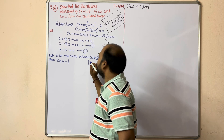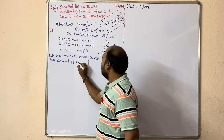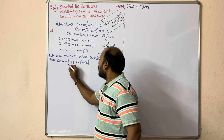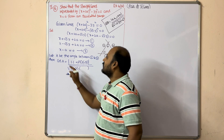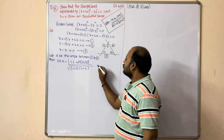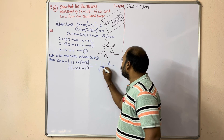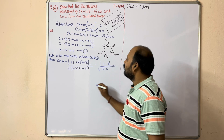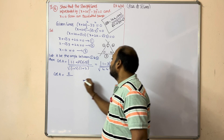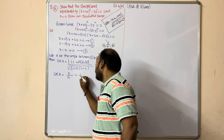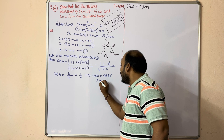For angle A between lines 1 and 2: the x-coefficients are both 1, so a₁a₂ = 1×1 = 1. The y-coefficients give b₁b₂ = √3 × (−√3) = −3. So the numerator is |1 − 3| = 2. The denominator is √(1² + (√3)²) × √(1² + (−√3)²) = √4 × √4 = 4. So cos A = 2/4 = 1/2 = cos 60°. Therefore A = 60°.